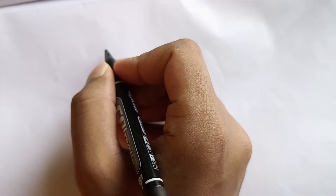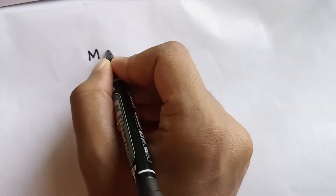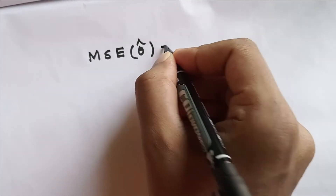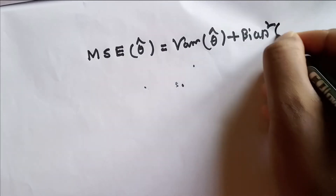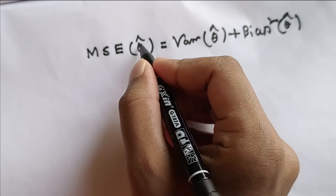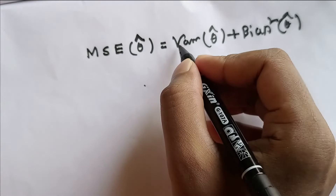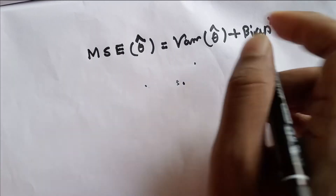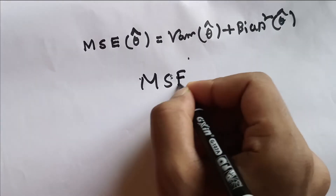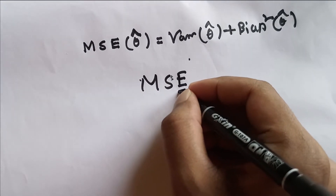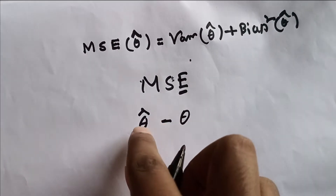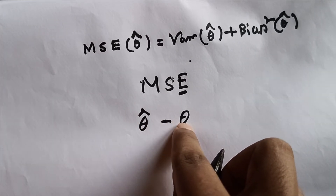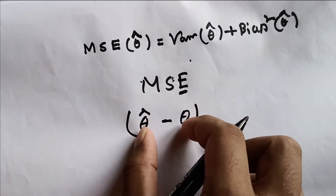Hello everyone. Today we will learn how to generate variance and bias from mean square error. We will learn the extraction of bias and variance — variance of theta estimate plus bias squared of theta. MSE is one kind of error, and we know that error is basically the difference between the expected value and the true population parameter value. This difference measurement is the error.